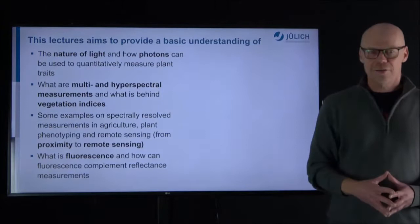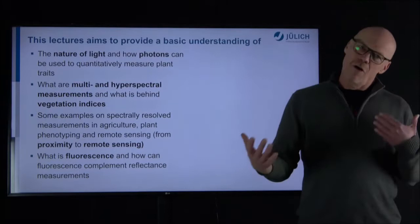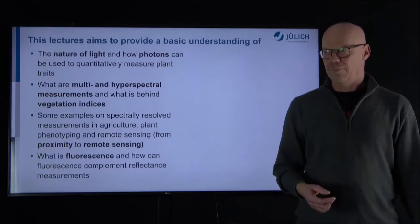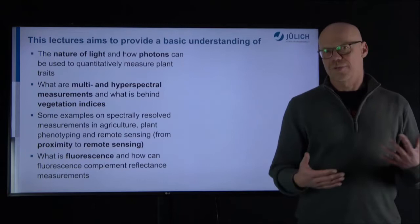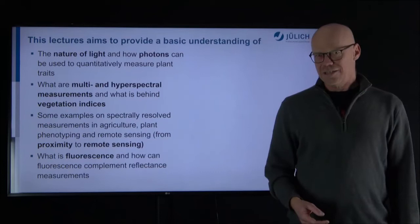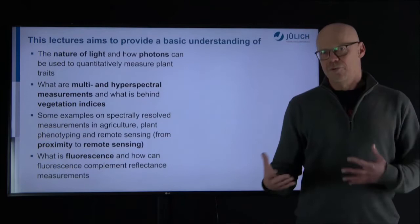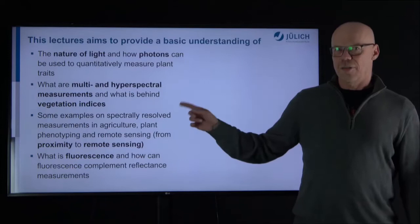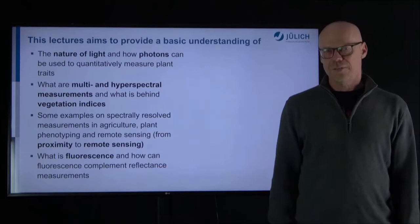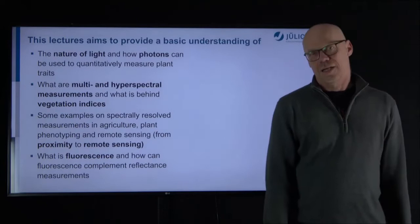To give you an overview of what to expect in the next 30 minutes, I have four topics to cover. First, I'd like to give you some concepts behind the nature of light — what photons are and how they interact with plant pigments. I'll then introduce multispectral and hyperspectral measurements and vegetation indices. These are linked with real-world examples in agricultural science for proximity and remote sensing and plant phenotyping. In the last five minutes, I'll also introduce the concept of fluorescence.